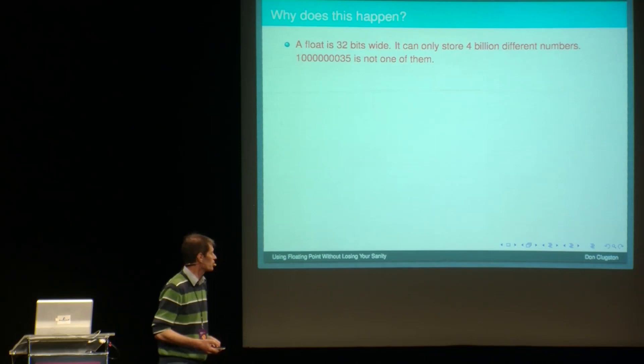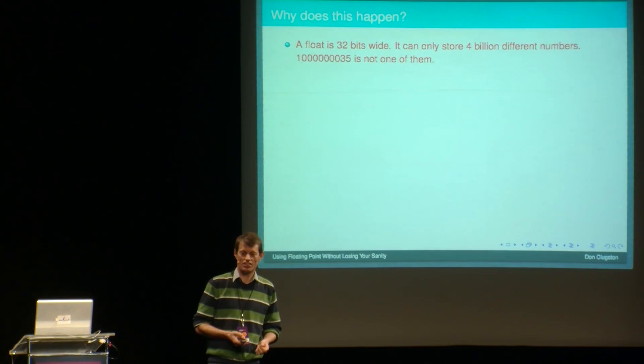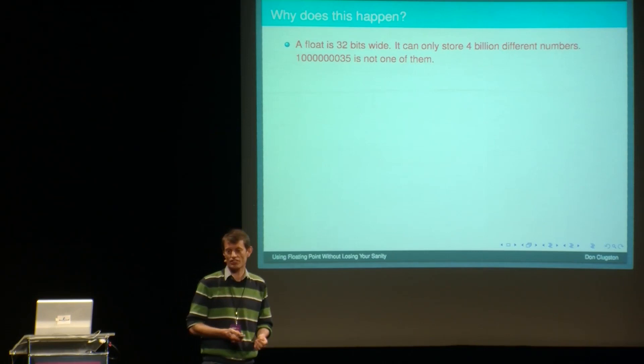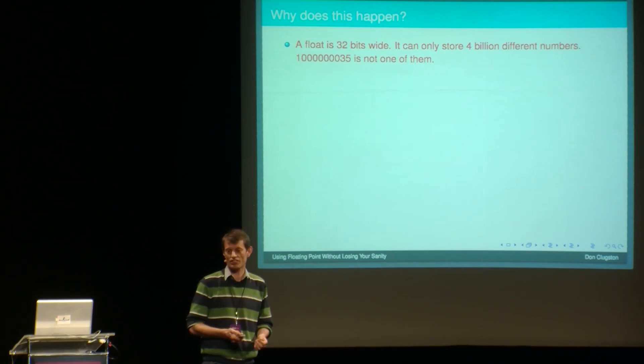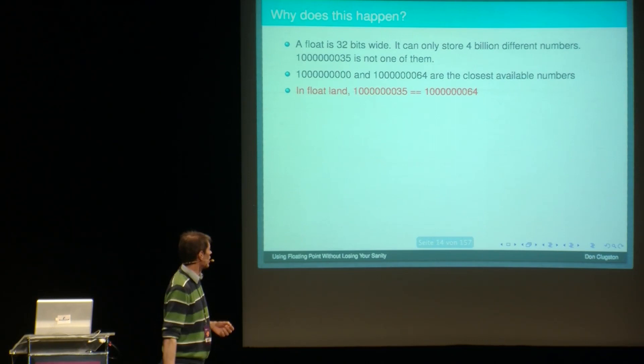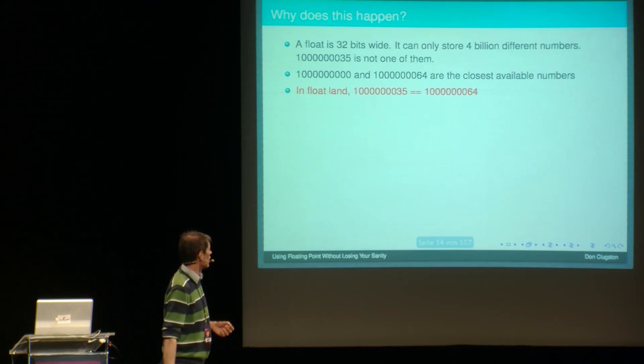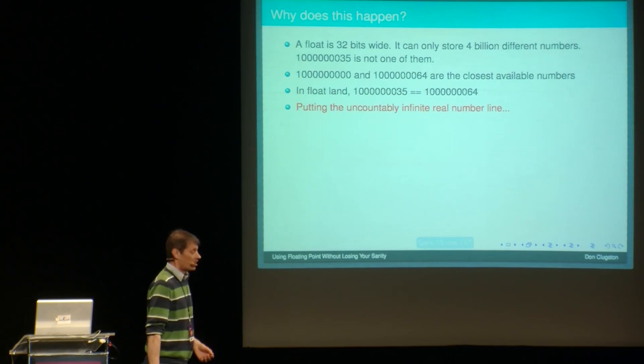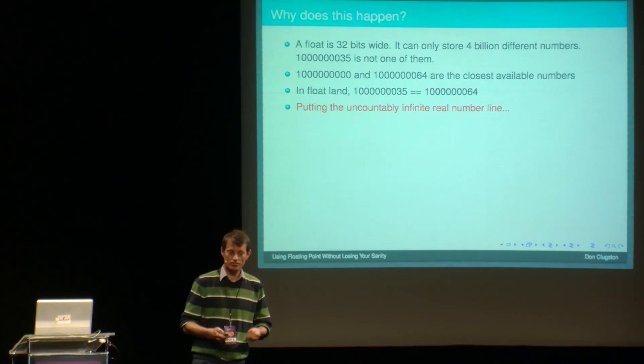But the 64, if you've got a late-night debugging session and you've got a mysterious 64, and you track it down to that code, you're going to have a very unpleasant night. So why does this happen? Well, the reason is pretty simple. A float is a 32-bit number. Just a few bytes. And it can only store four billion different numbers. And the number that we want, one billion and 35, is just not on the list of numbers that it has. It's not representable. The closest that it has is one billion and 64. So it gives you a billion and 64.